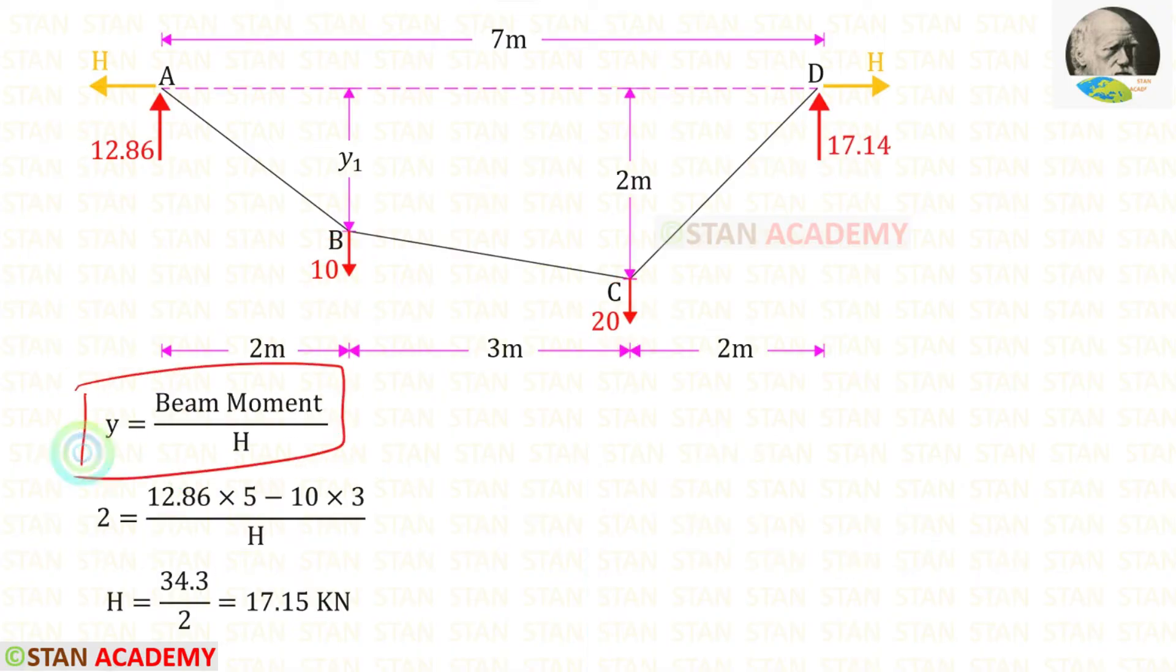Now using this formula we can find the horizontal thrust H. At point C we know the dip is 2 meters. Using that we can find the horizontal thrust. At point C let us find the beam moment. The vertical reaction is acting in the clockwise direction so it will be positive and the distance is 5.